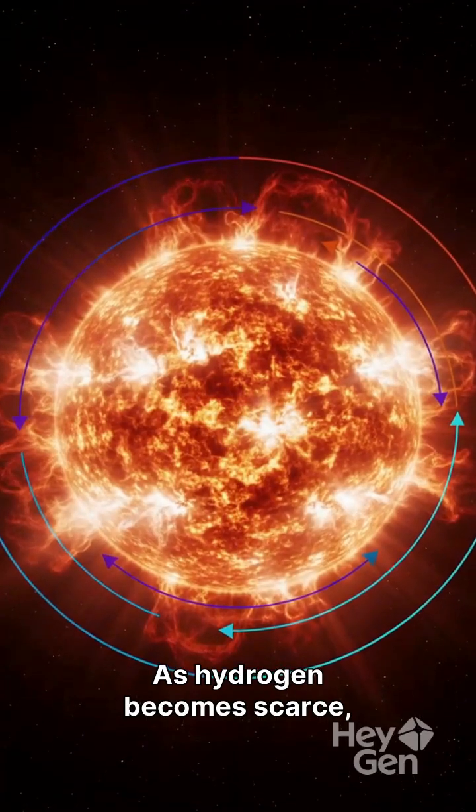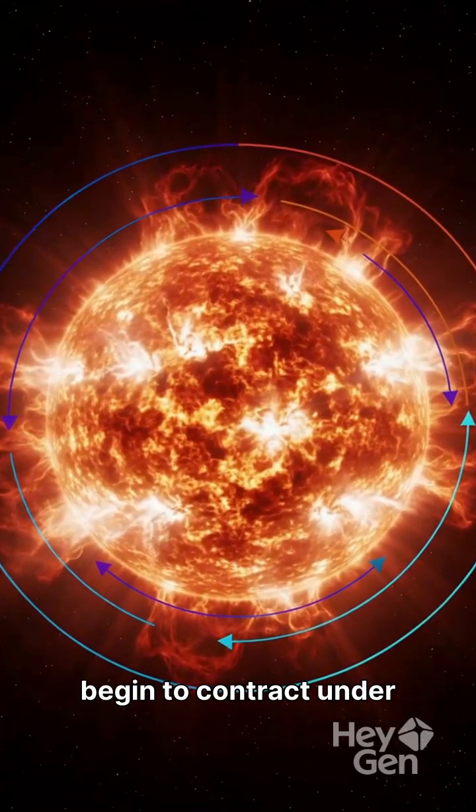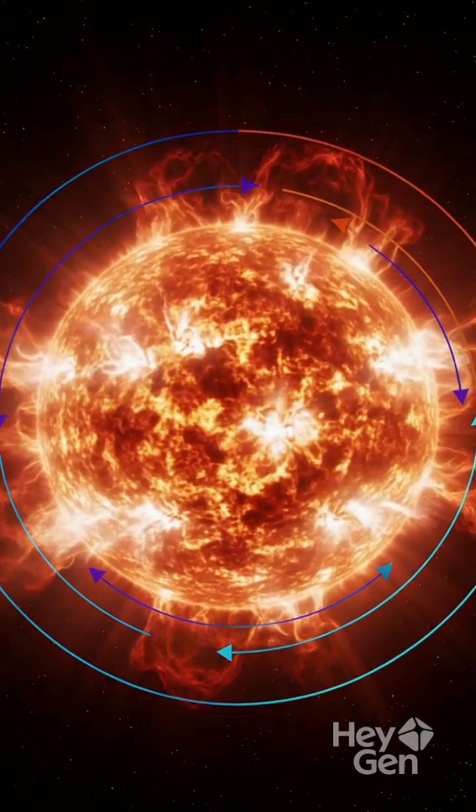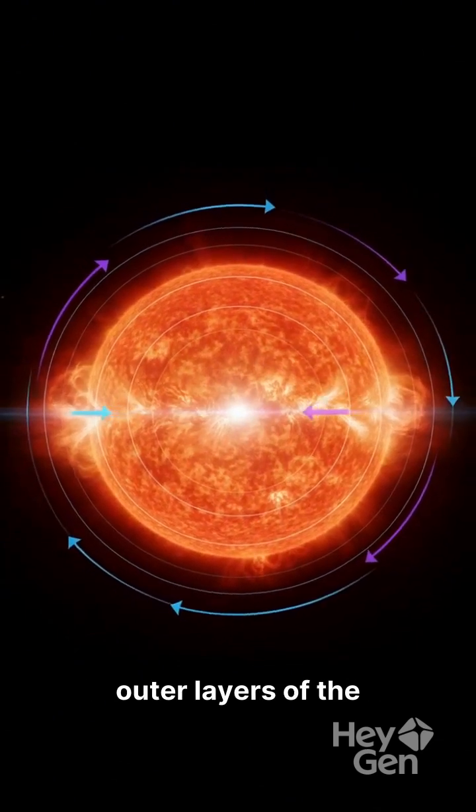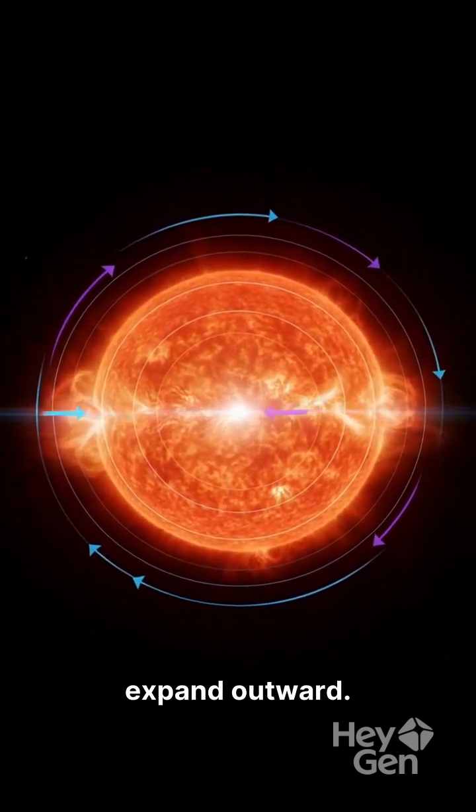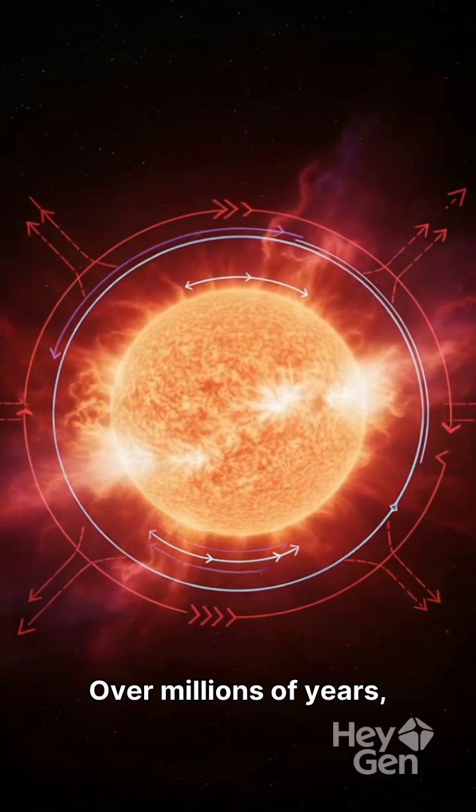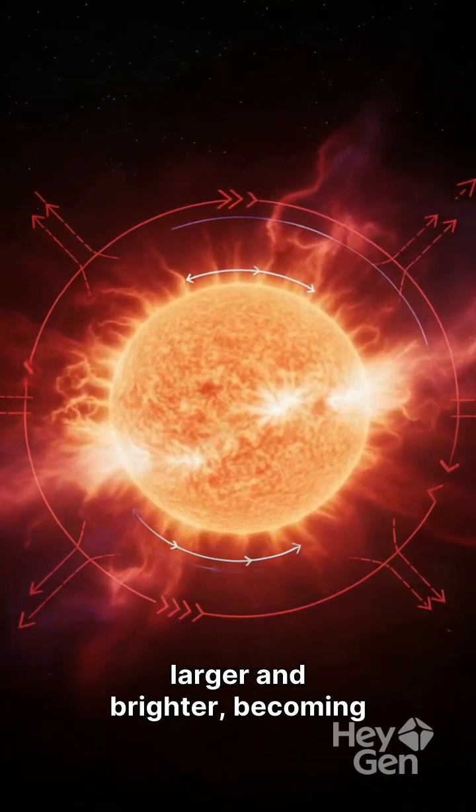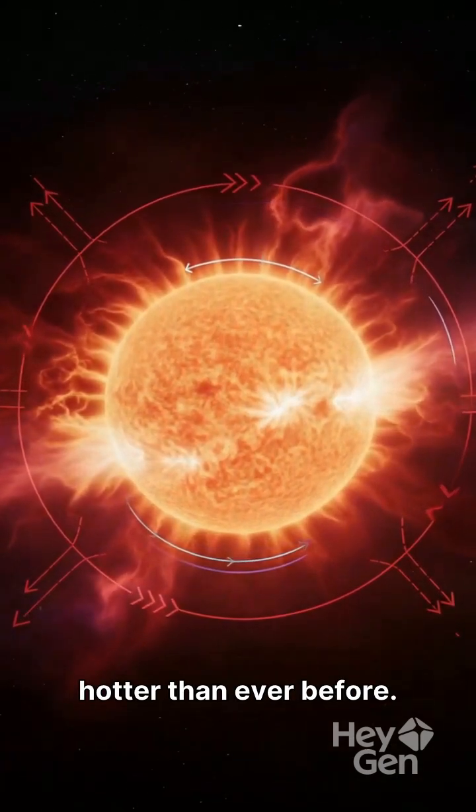As hydrogen becomes scarce, the Sun's core will begin to contract under its own gravity. When this happens, the outer layers of the Sun will start to expand outward. Over millions of years, the Sun will grow larger and brighter, becoming hotter than ever before.